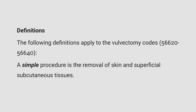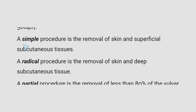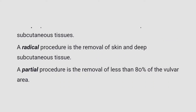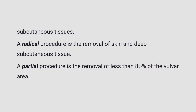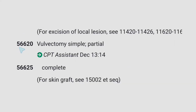Let us study the guidelines related to the female genital system in your CPT manual, page number 439. They have mentioned definitions that apply to the vulvectomy codes. A simple procedure is the removal of skin and superficial subcutaneous tissue. A radical procedure is removal of skin and deep subcutaneous tissue. A partial procedure is removal of less than 80% of the vulvar area. A complete procedure is removal of greater than 80% of the vulvar area. Please highlight these definitions — they are very important.